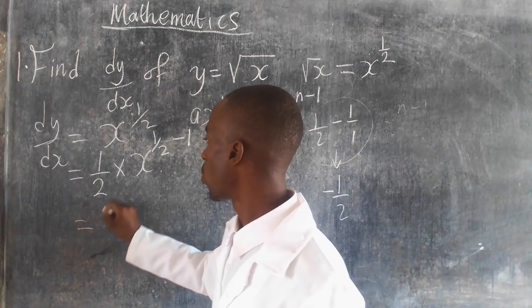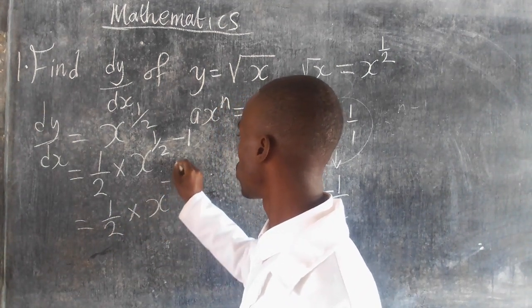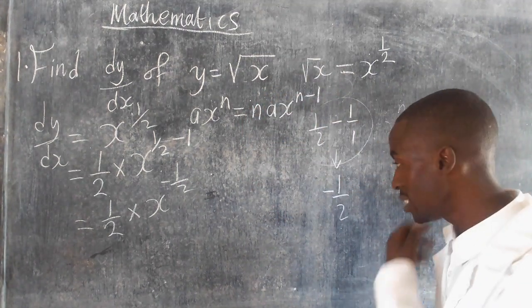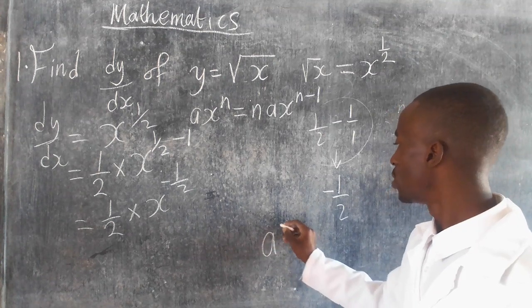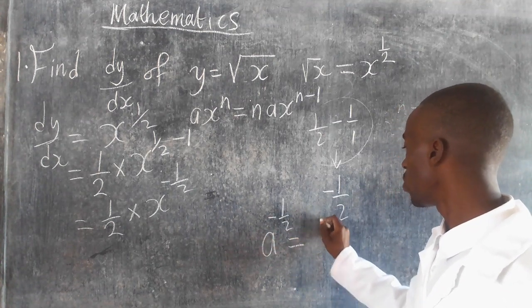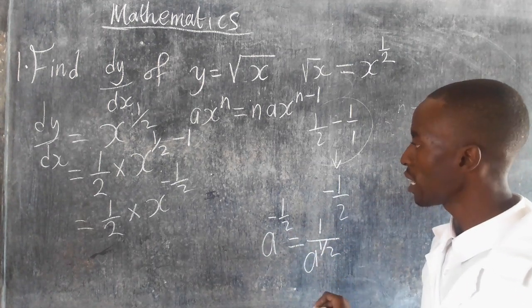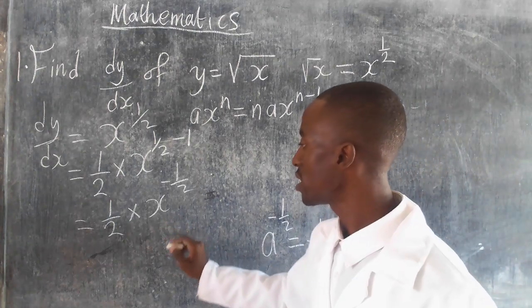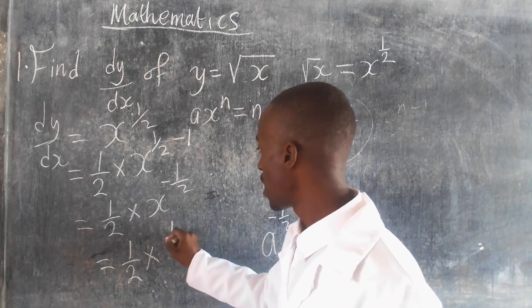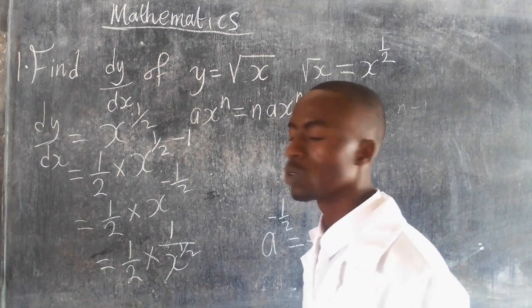Meaning I have 1 over 2 multiplied by x to the power negative 1 over 2. Now based on the laws of indices, we say that if I have a to the power negative 1 over 2, it is the same as 1 over a to the power 1 over 2.